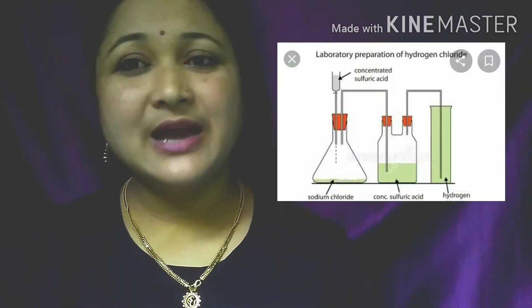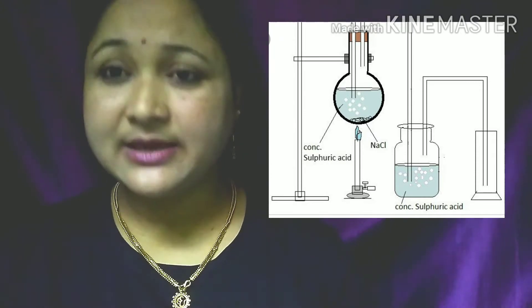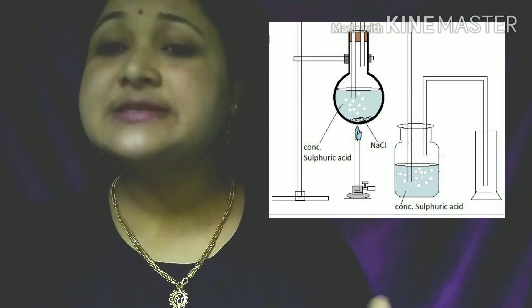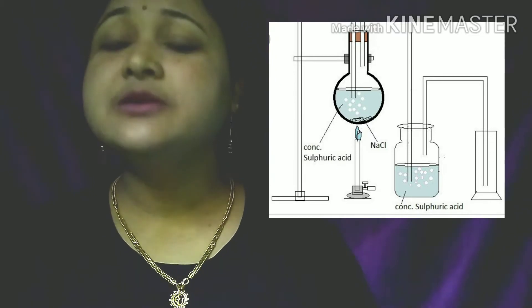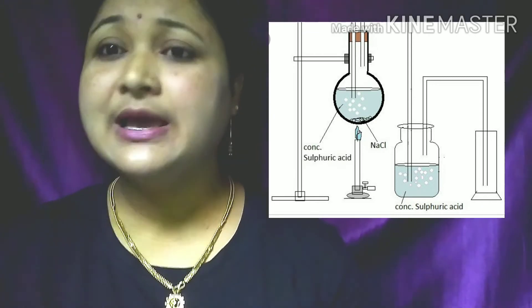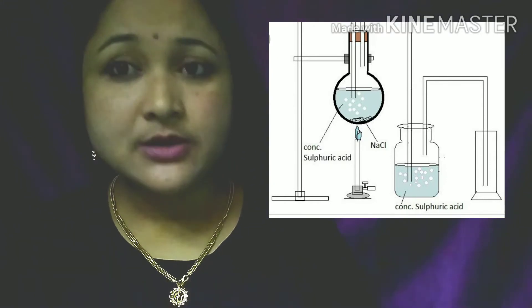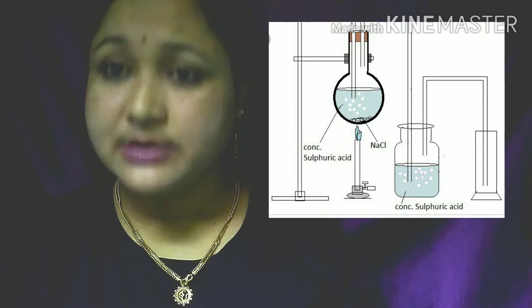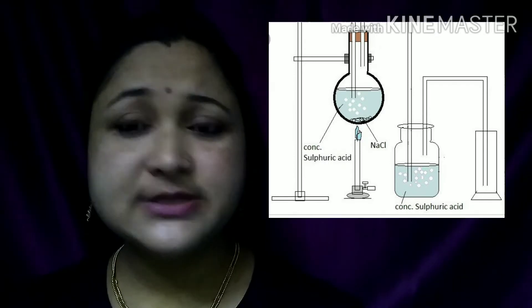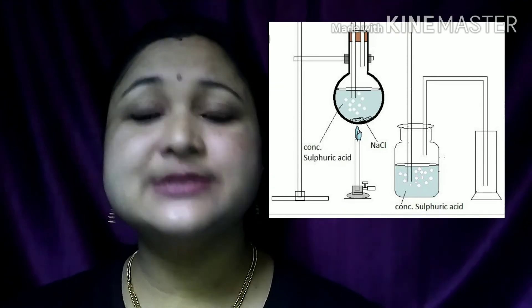Now let's look at the experimental setup for preparing hydrochloric acid. In a round-bottom flask, sodium chloride is taken, and concentrated sulfuric acid is added through a thistle funnel. The resultant salt, sodium sulfate, is formed, and hydrogen chloride gas is produced and transferred through a delivery tube.